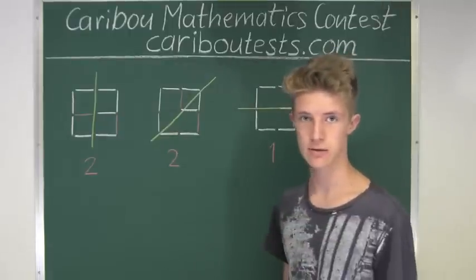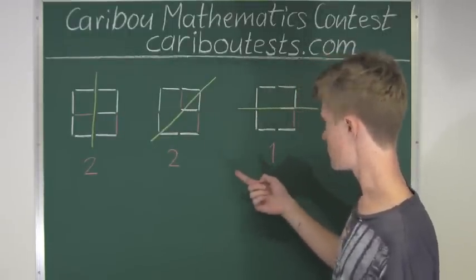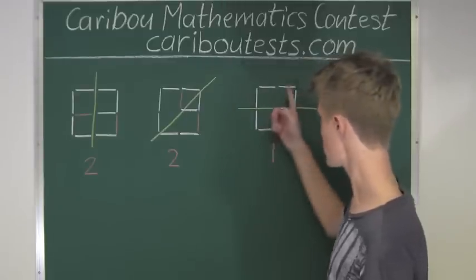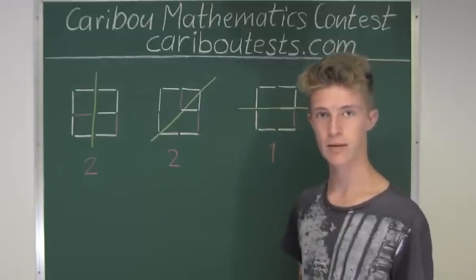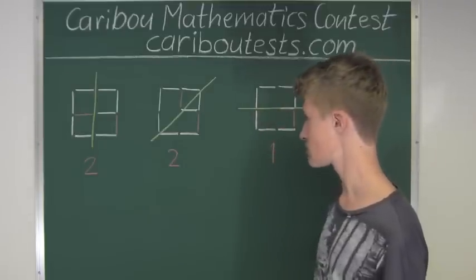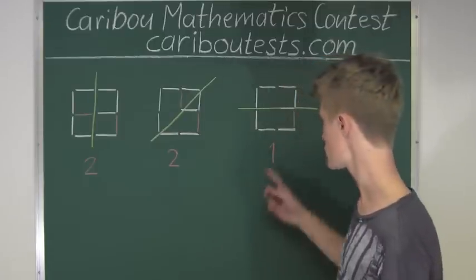Now we know the answer is one, because we can only have either zero additional matches, and just looking at the diagram right away, there is no immediate line of symmetry. Therefore, the smallest number of matchsticks needed to be added to make a line of symmetry is one.